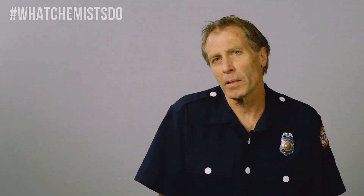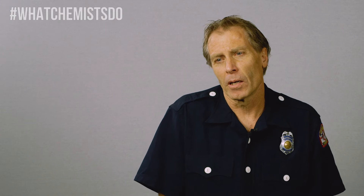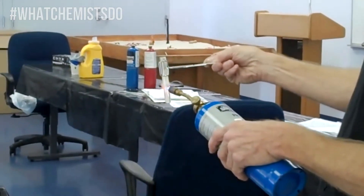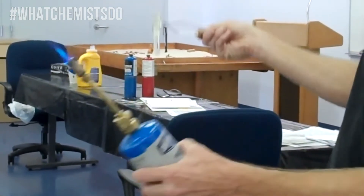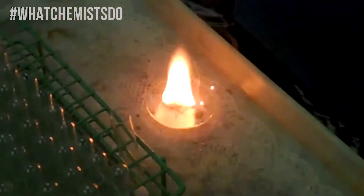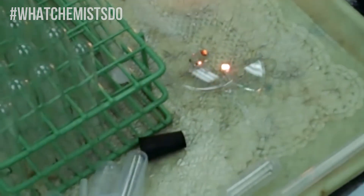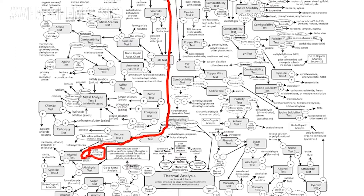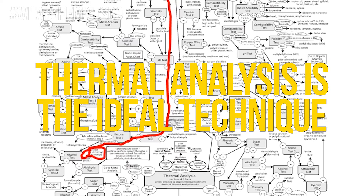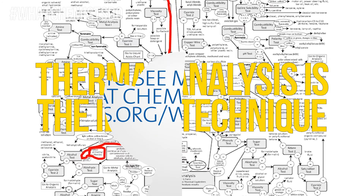What's illegally dumped and abandoned out there oftentimes is so complex that the machines — the spectroscopic methods — can't come up with a good answer. No match found, or just not in the library. So picking apart a mixed bag of unknown materials, oftentimes the best tool out there still to this day is using wet chemistry qualitative analysis techniques.